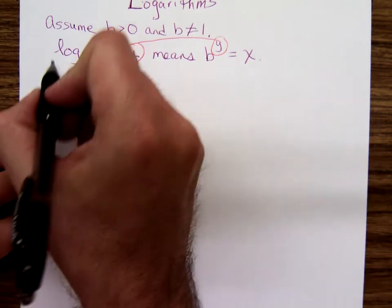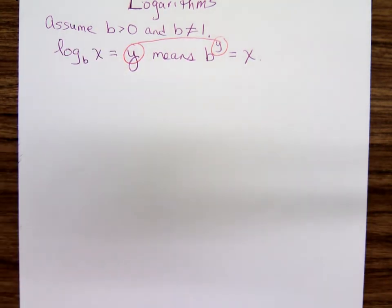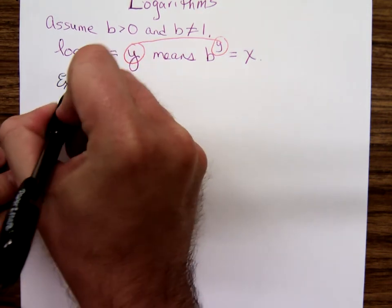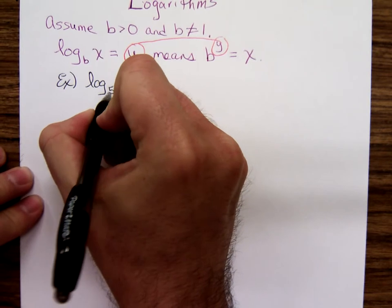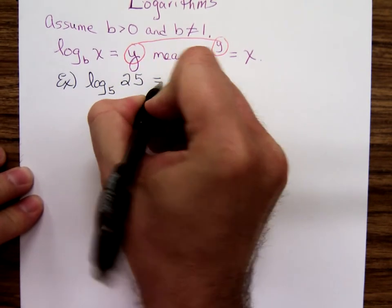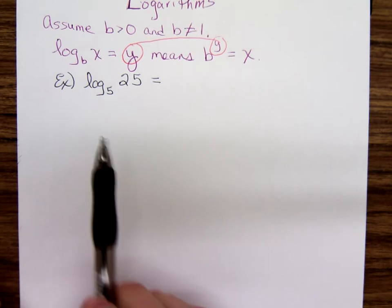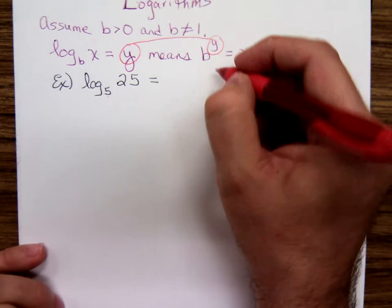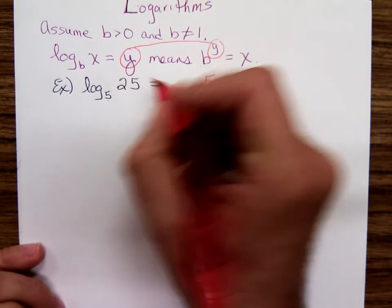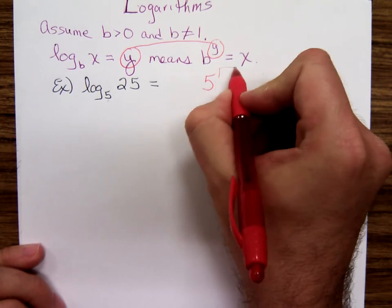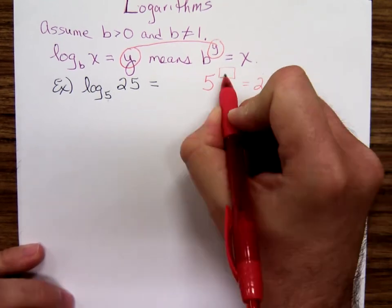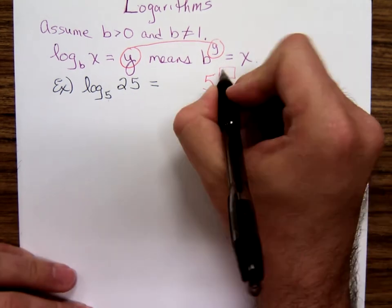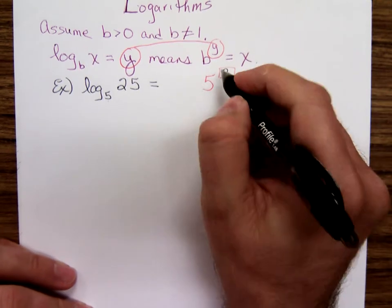Just knowing that definition we could do an example. Log base 5 of 25. You ask yourself what exponent do you put on 5 in order to get 25? 5 to what power would give 25? Whatever that exponent is, that's what this logarithm equals. Logarithms equal exponents. Well, 5 squared is 25.